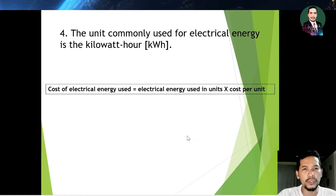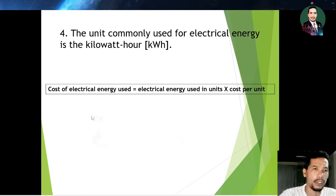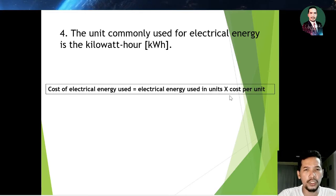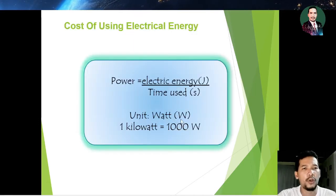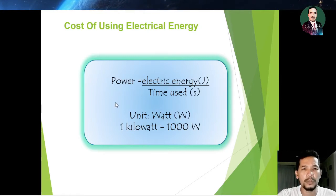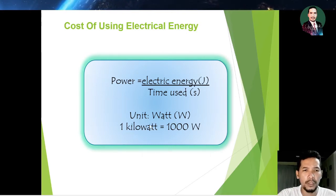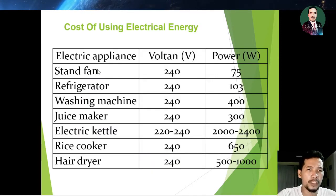The unit commonly used for electrical energy is kilowatt-hour. The cost of electrical energy used is equal to electrical energy used in units, multiplied by the cost per unit. Power is equal to electrical energy in joules divided by time in seconds. The unit is watt, and one kilowatt is equal to one thousand watts.